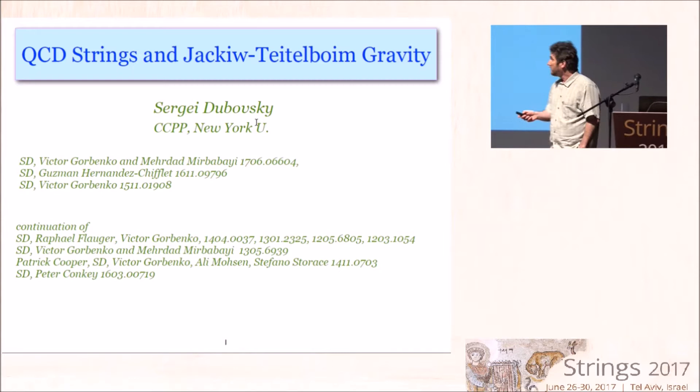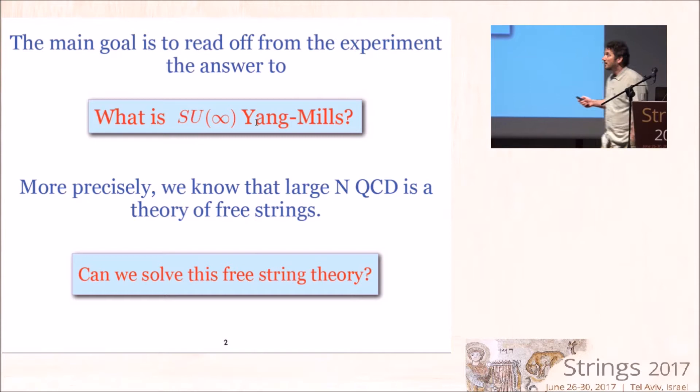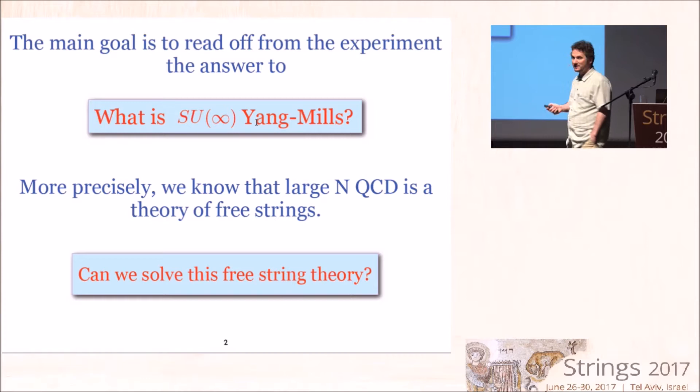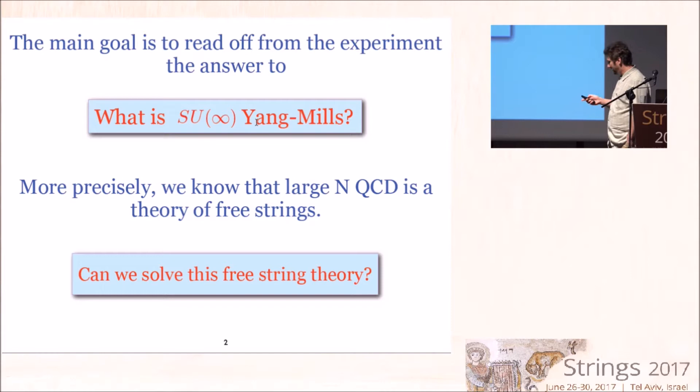The main goal of this program is to read off from the experiment the answer to the question: what is the solution of pure glue in the large-N limit? More precisely, we kind of know the answer — it's supposed to be a theory of free strings. So really the question is: can we solve this free string theory, what is the corresponding worldsheet theory?